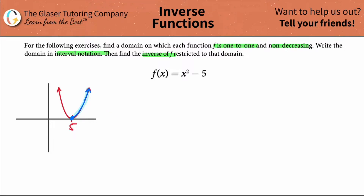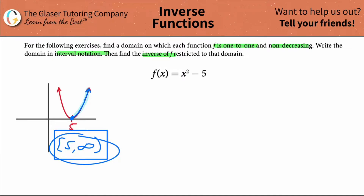So that would be the domain — inclusive of five and not inclusive of infinity, because it cannot possibly go out to infinity. This is the domain. If domains are a little challenging to think about, check out our domain playlist.